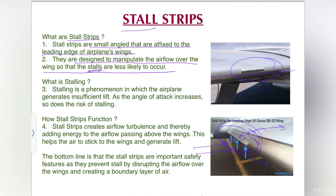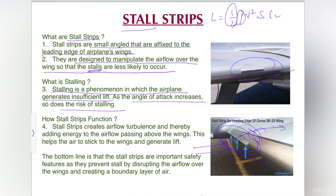So what is a stall? Stall is a phenomenon in which the airplane generates insufficient lift as the angle of attack increases, so does the risk of stalling. We are aware that lift is equal to half rho v squared S CL, where half is a constant, rho is the density of the medium in which the aircraft is flying, v is the velocity of the aircraft, S is the surface area of the wing, and CL is the coefficient of lift which is dependent on the angle of attack.